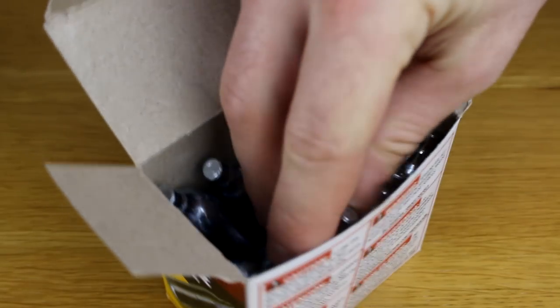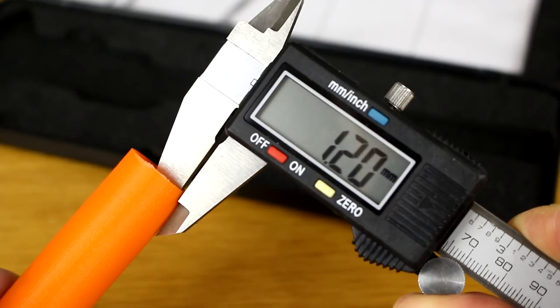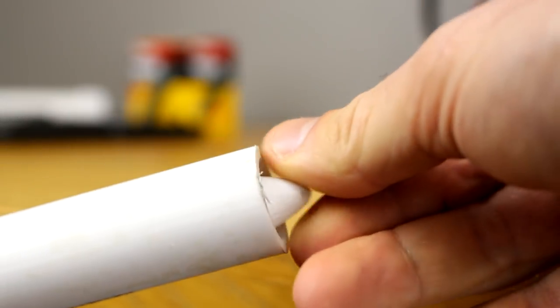I designed these rockets so that 12g CO2 cartridges would be able to fit snugly inside. The walls of these rockets had to be very thin so that they would fit perfectly inside of a 3/4 inch PVC pipe.